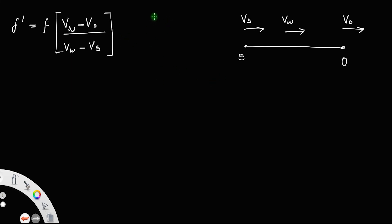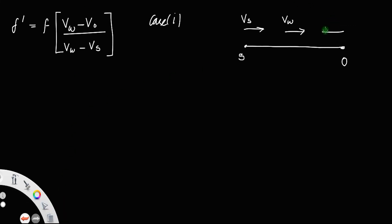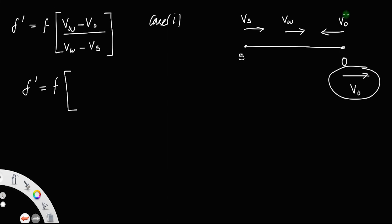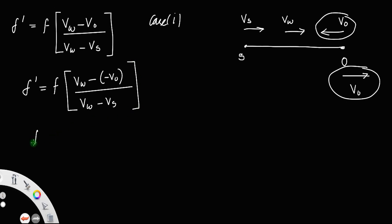Case 1: the observer is moving toward the source. In the reference case, the observer moved away from the source, which gave a positive V_O in the denominator. Now the observer moves toward the source, so the sign changes. We replace V_O with minus V_O in the numerator, giving F dash = F times (V_W plus V_O) divided by (V_W minus V_S).